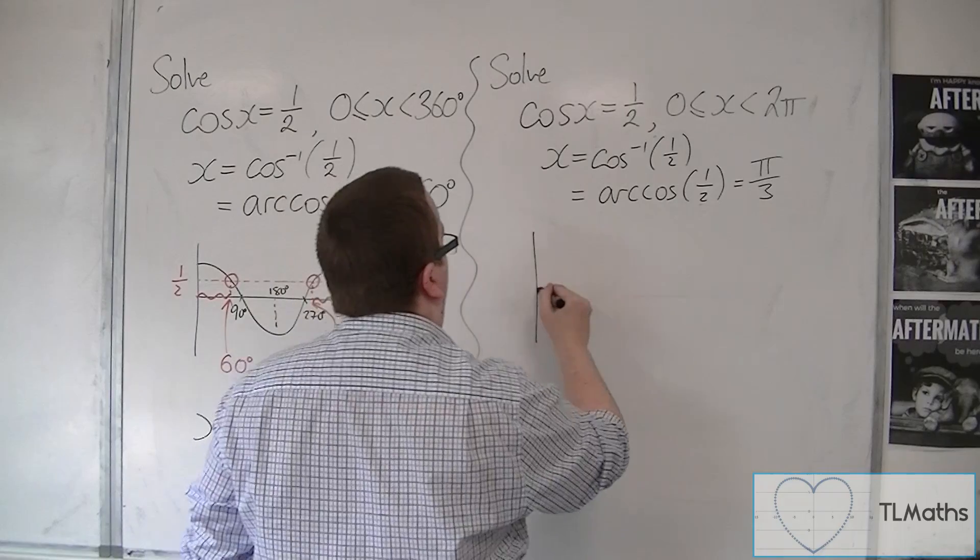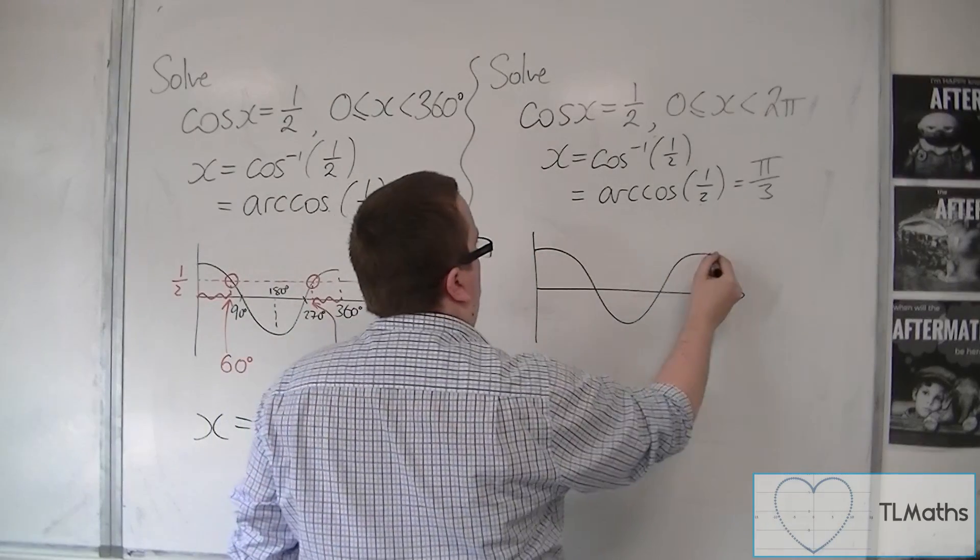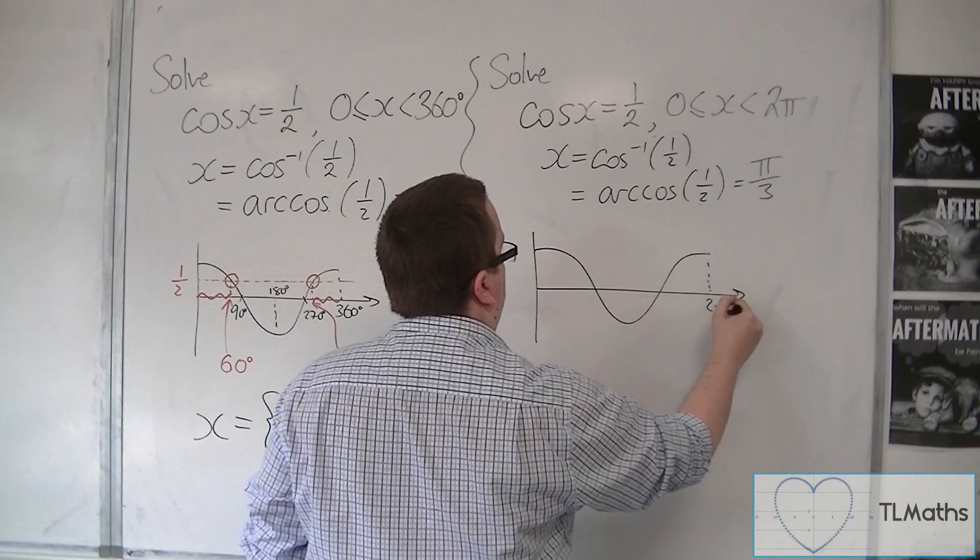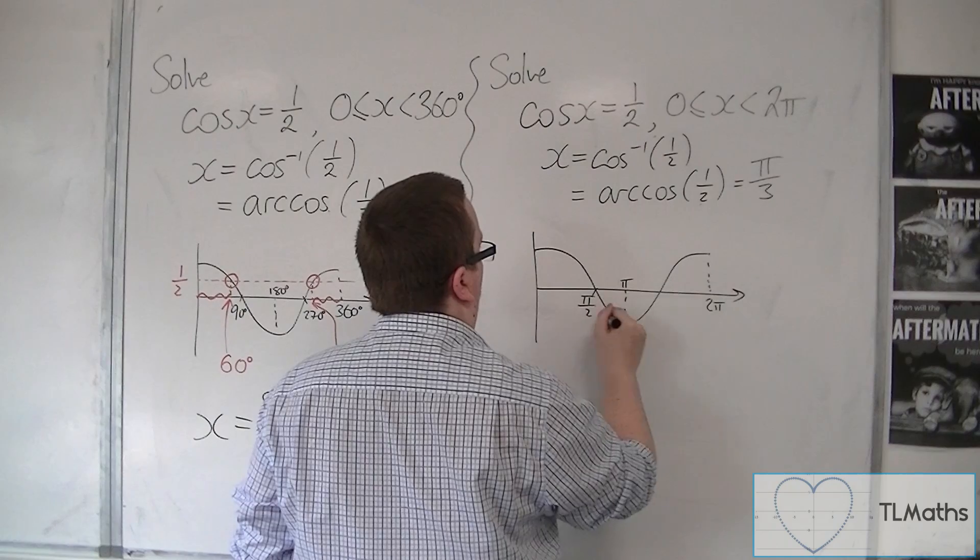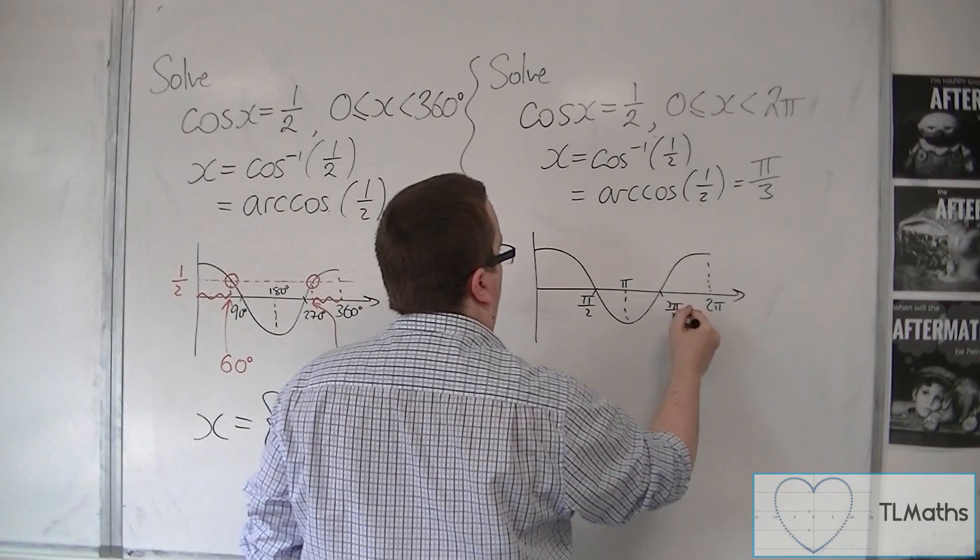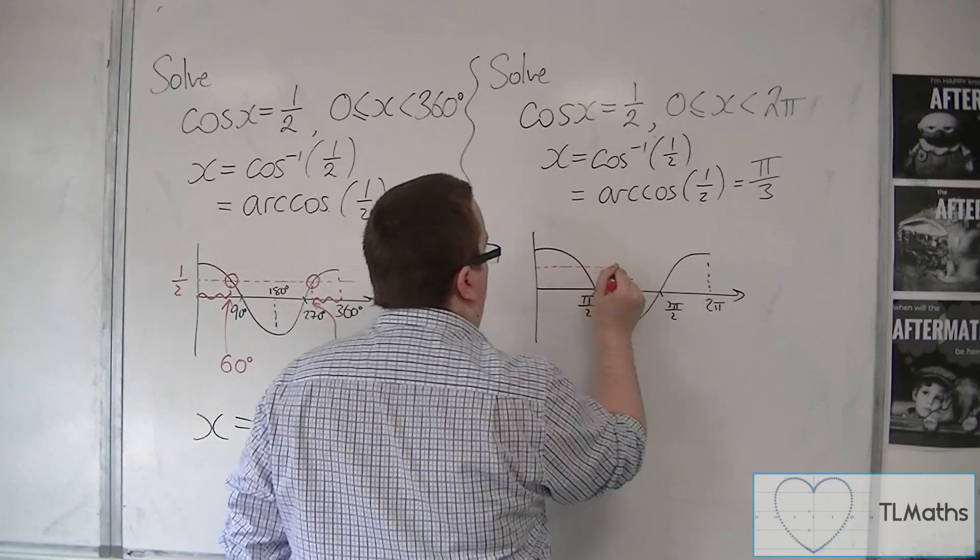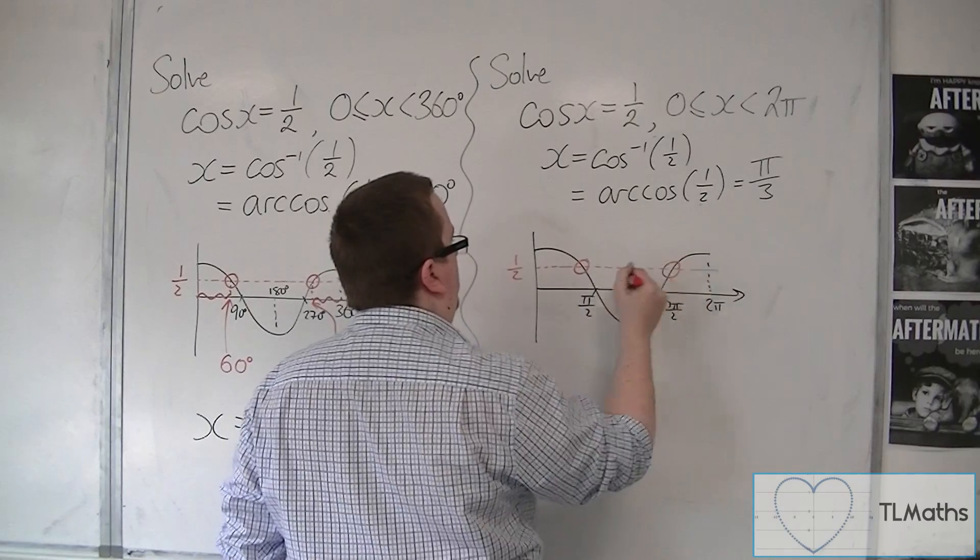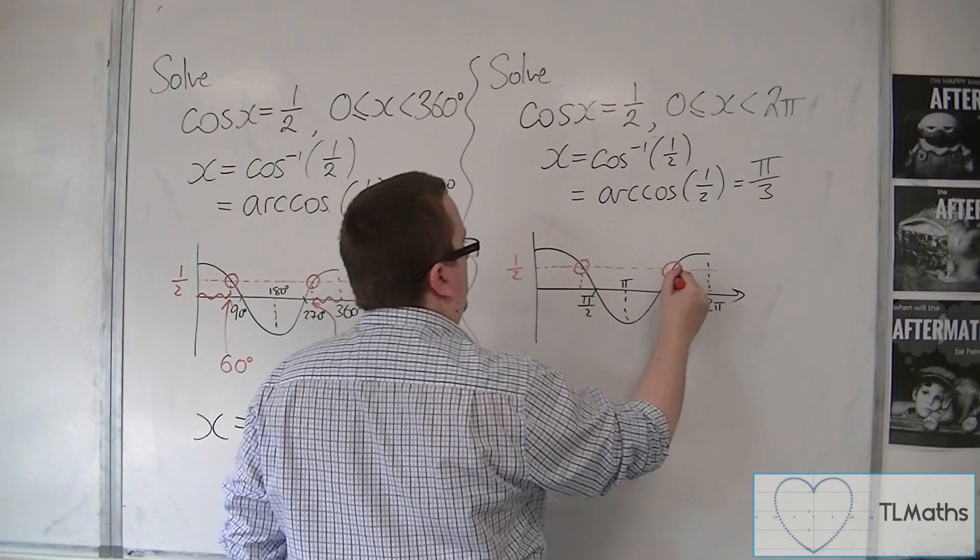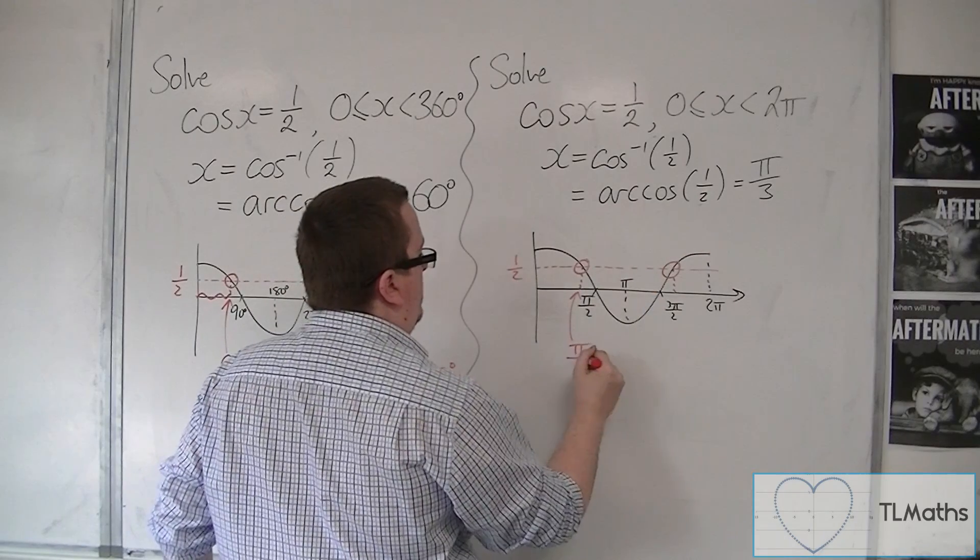We then sketch cosine. Doesn't need to be perfect. There's 2 pi, there's pi, there's pi over 2, 3 pi over 2. And then 1 half is this horizontal line, crossing the curve there and there. So this point is the one that my calculator has given to me, pi over 3.